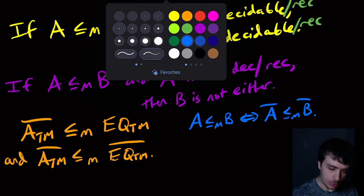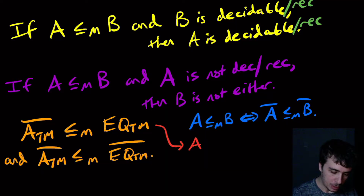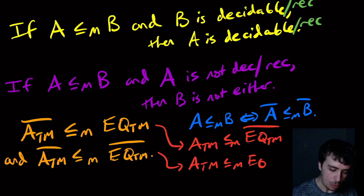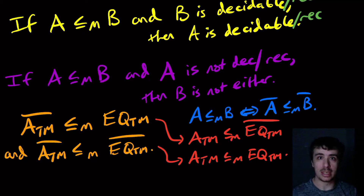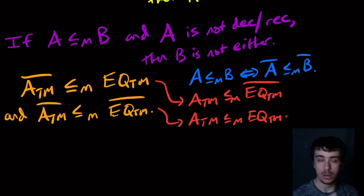So instead, we're going to prove: ATM mapping reduces to EQTM complement, and ATM mapping reduces to EQTM (no complement). It's just easier to work with ATM than its complement, because you don't have to worry about whether the input actually encodes a Turing machine as a string. So use this complement trick whenever possible.